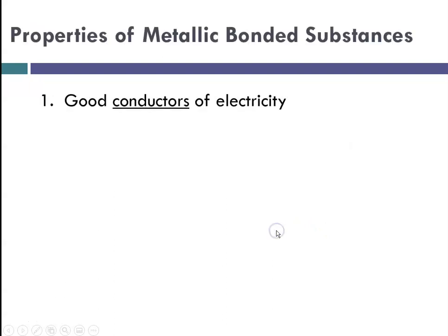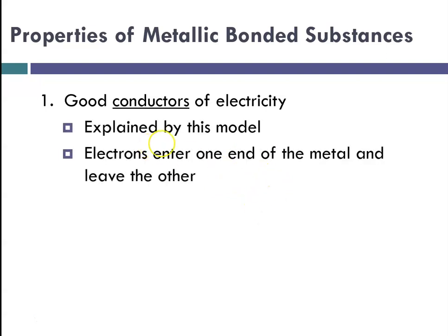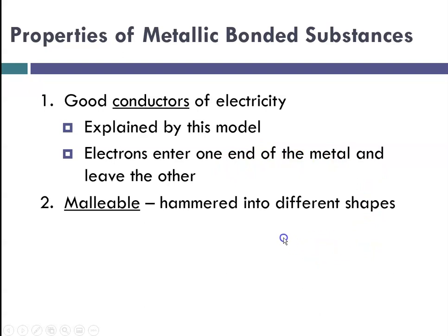Properties of metallic bonded substances, they are good conductors, and again, they can conduct electricity because these electrons are free-floating, and electrons can enter one end of the metal and conduct their way through and leave at the other end. They're malleable, capable of being hammered into different shapes, and they are ductile, capable of being drawn into wires. This is a way of explaining how metals behave, this so-called sea of electron metallic bonding model.